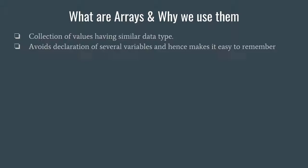Otherwise if you have a very large program, more than half of your time will just vanish trying to search what your variable name is. So that is a good flexibility that arrays provide us. Arrays are stored in contiguous locations in memory — that means they are stored one beside the other. For example, if we have a memory location say 1000, then the first array variable will be stored at 1000, then 1002, then 1004, 1006, and so on.